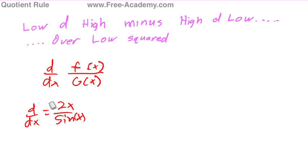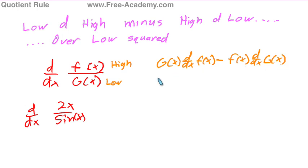So our formula: low d high minus high d low. Well low g of x is low on the fraction and f of x is high on the fraction. So low g of x d high f of x, minus high f of x d low g of x over low squared g of x squared. g of x times the derivative of f of x minus f of x times the derivative of g of x over g of x squared. That is our quotient rule. That's the formula.